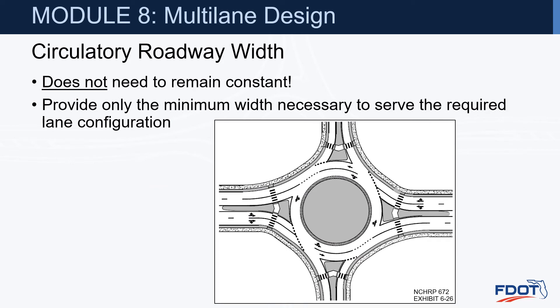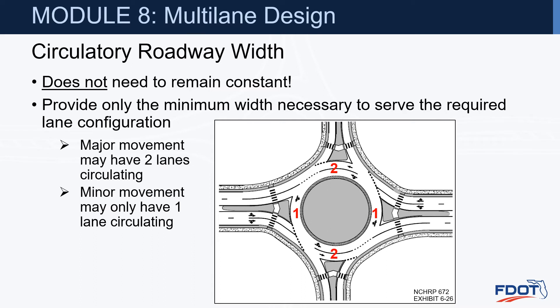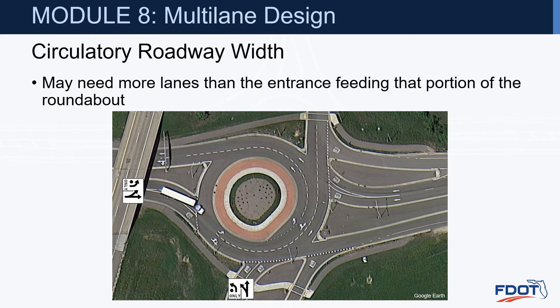The circulatory roadway width does not need to remain constant — provide only the minimum width necessary to serve the required lane configuration. For example, the major east-west movement may have two lanes while the minor movement has only one lane circulating. Just because you have two lanes entering at one entry doesn't mean the entire circulatory roadway needs to be two lanes. In some instances, the circulatory roadway may need to be wider than the corresponding entrance — for example, where two consecutive entries require exclusive left turns, an extra lane and spiral marking will be needed to enable all vehicles to reach their intended exits without being trapped or changing lanes.